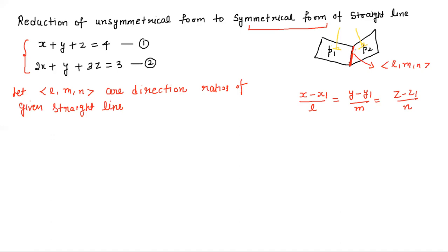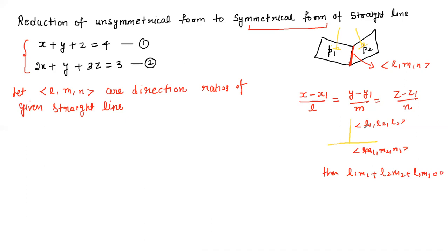So there is a result: if two lines are perpendicular, and the first line has direction ratios L₁, L₂, L₃ and the second line has direction ratios M₁, M₂, M₃, then L₁M₁ + L₂M₂ + L₃M₃ = 0. That means the sum of corresponding direction ratios multiplied together equals zero.